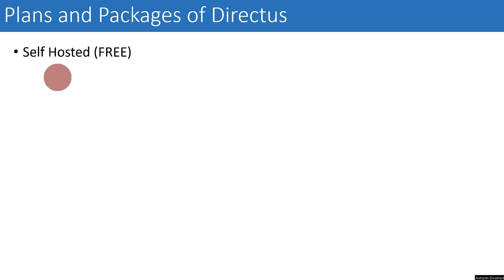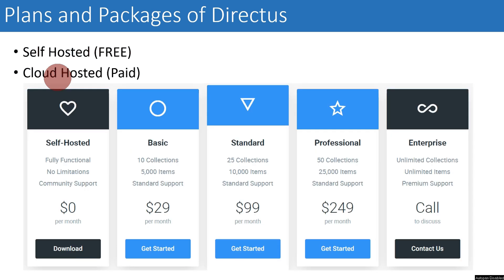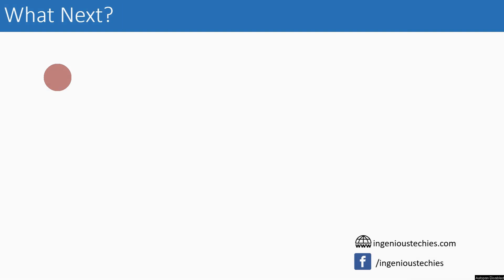Now let us see the plans and packages of Directus. Directus has two major plans. The first is the free plan, which is self-hosted — you can download the entire package from Directus and host it yourself. The second is the cloud-hosted paid version, which comes in different tiers based on the number of collections, the number of items, and the number of users you will have in the back end. We will go into detail about what collections and items are in future videos.